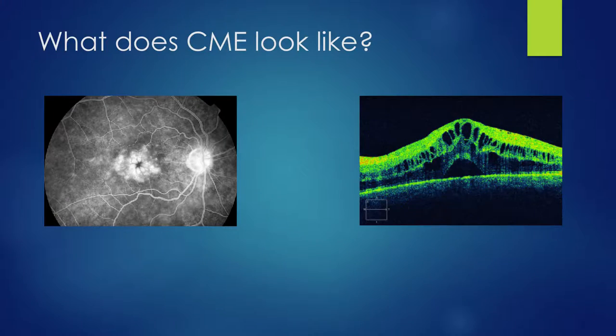Fluorescent angiography is increasingly being replaced now by OCT, or optical coherence tomography. On the middle and right panels, you can see both spectral domain and temporal domain OCT images, where in the macula you'll see large cysts in the inner retina with fluid collections due to leakage from blood vessels. Sometimes you can also get some subretinal fluid in the context of CME, although that is less common.